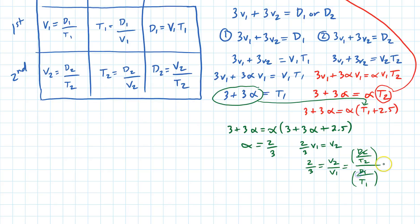And since the distance of D1 and D2 are the same, I'm going to cancel those out there, and this eventually will be T1 over T2.